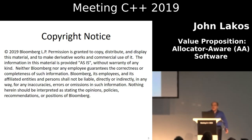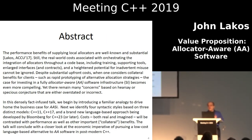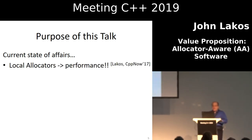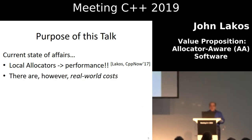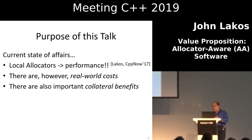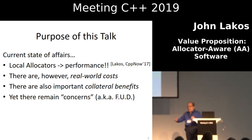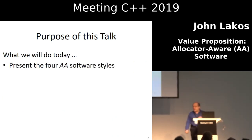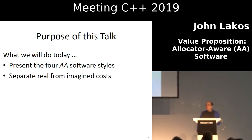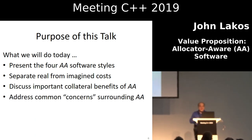Here's the abstract. You don't really need to read it because you're already here. For people watching on video, this is what I'm going to talk about: the purpose of this talk, the current state of affairs, that local allocators provide performance. There are a lot of real-world costs, and there are also some important collateral benefits. And yet there are some concerns — I put them in quotes because the concerns aren't really founded. What we'd like to do today is present allocator-aware software styles, separate real from imagined costs, discuss important collateral benefits, and talk about common concerns people have about allocators.